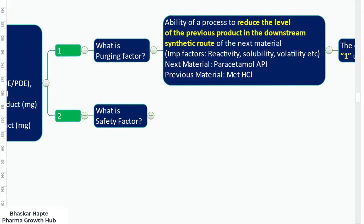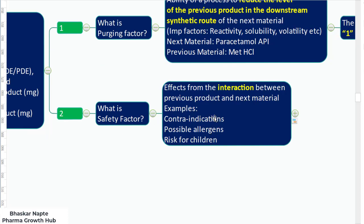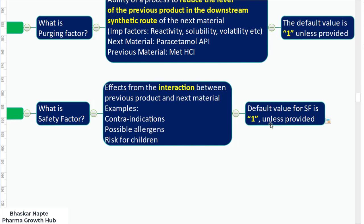The safety factor accounts for the interaction between the previous product and the next product. For example, if there is a contraindication — such as the previous product lowering blood pressure while the next product increases blood pressure — or if there are possible allergens or risks for children, the safety factor is adjusted accordingly. The default value for safety factor is 1 if you have not specifically established it.